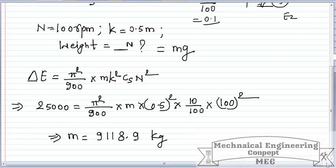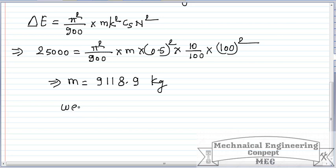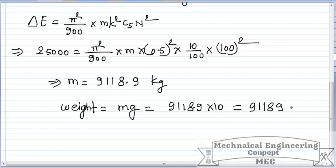Now we need to find the weight. Weight equals mass times g. 9118.9 times 10 equals 91,189 Newtons, which can be written as 91.89 kilo-Newtons. This is the weight of the flywheel.